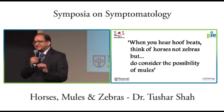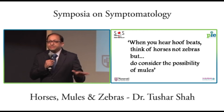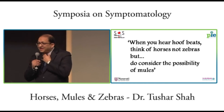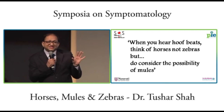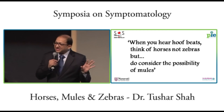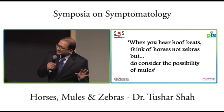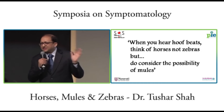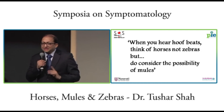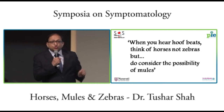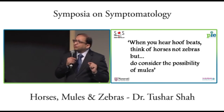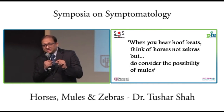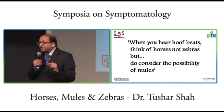My favorite example: a person comes with throat pain. Your horse is pharyngitis or tonsillitis. Your zebra could be anything like pharyngeal carcinoma. But your mule is the most important — thyroiditis could be a mule.